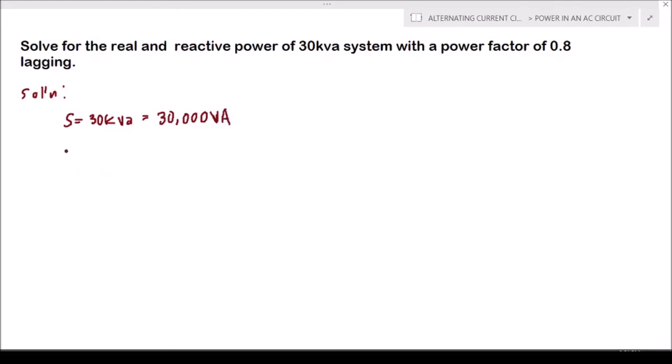Then our power factor is 0.8 lagging. The lagging on the power factor means that the angle, the power factor angle, is negative, or the current lags the voltage by a certain electrical degrees. If you are going to write that one, that will be a negative angle in our phasor diagram. But in this point we are just trying to get the real and reactive power, so there's no need for us to have the phasor diagram.